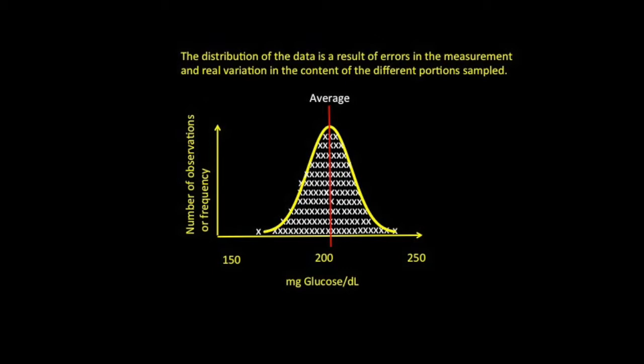The more reproducible the data, the skinnier the curve. The wider the curve, the less certainty that we have in a given measurement of its being close to the true value.